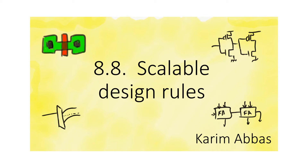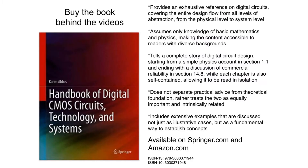We took a look at design rules as a general concept and we also took a look at two special types of design rules: density rules and antenna damage rules. Now we want to take a look at more general design rules — not special design rules. These are the rules that have to do with the sizes and the separations of the different layers in the layout, and we have two types of design rules.